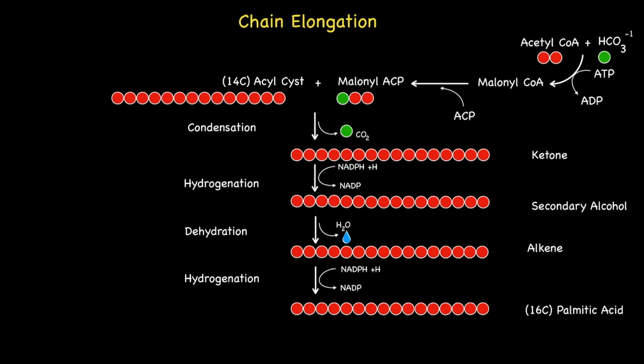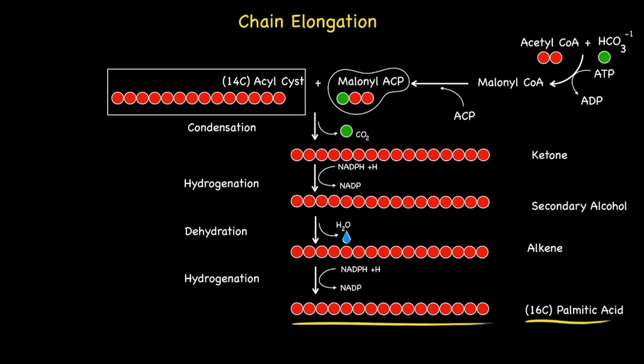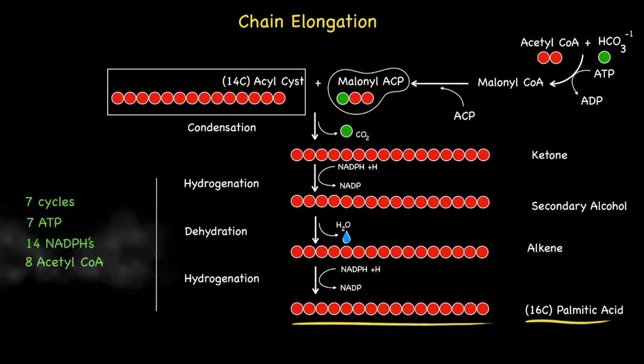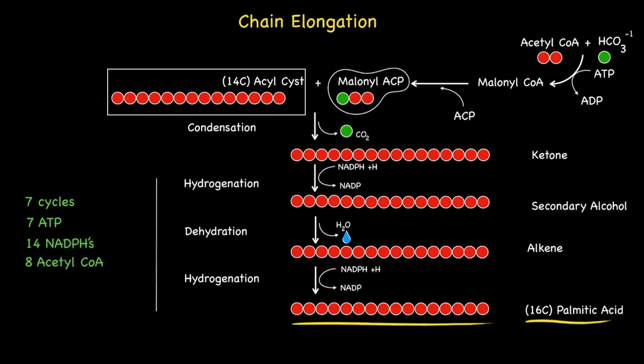During the seventh chain elongation, the process comes to a conclusion in which the 14-carbon acyl group combines with a malonyl group to give the 16-carbon palmitic acid. In summary, the whole chain elongation process from start to finish requires seven cycles, seven ATPs, 14 NADPHs, and eight acetyl-CoAs to give palmitic acid.